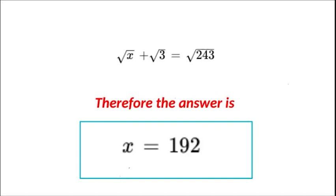So the answer to the radical equation—the square root of x plus the square root of 3 is equal to the square root of 243—is x equals 192.